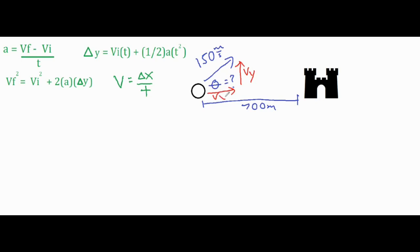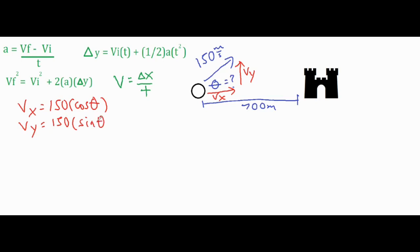We'll find the components of velocity in terms of theta. The velocity in the x direction is 150 times the cosine of theta, since we don't know the angle. The vertical component is 150 times the sine of theta, using the opposite side over hypotenuse for the y component. The formula for constant motion applies only to the horizontal component, the vx component.